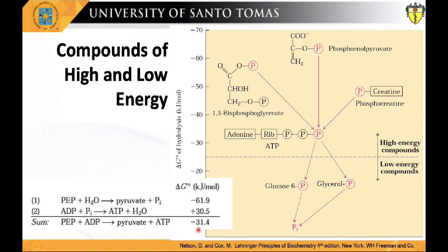Much of catabolism is directed toward the synthesis of high-energy phosphate compounds, but their formation is not an end in itself. They are the means of activating a very wide variety of compounds for further chemical transformation. The transfer of a phosphoryl group to a compound effectively puts free energy into that compound so that it has more free energy to give up during subsequent metabolic transformations.